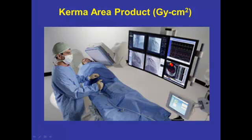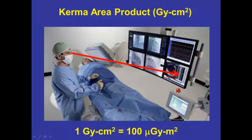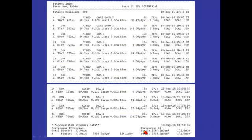The Kerma area product is the number presented to you on the monitor. If you're using Siemens equipment, remember that Siemens likes to use micro grey metres squared — I have no idea why. I like to think in terms of grey centimetres squared, because in radiography it's typically 1, in GI/GU it's typically 10, and in interventional radiology it's typically 100. To convert from micro grey metres squared to grey centimetres squared, you simply divide by 100.